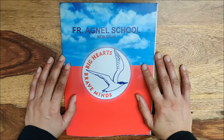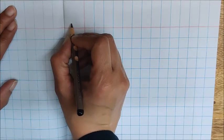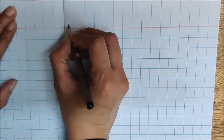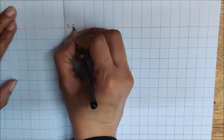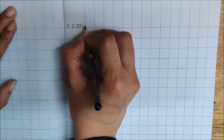So children, open a new page. Write the date here. Today is February 5. 5 dot, 2 dot, 20, 21.